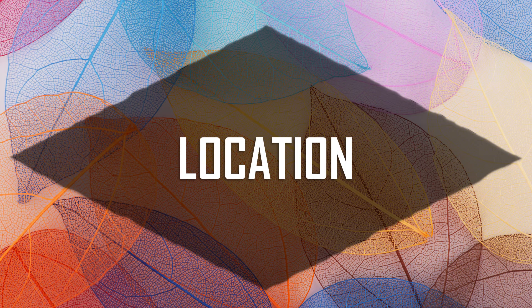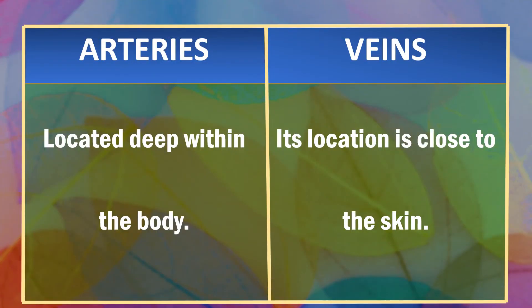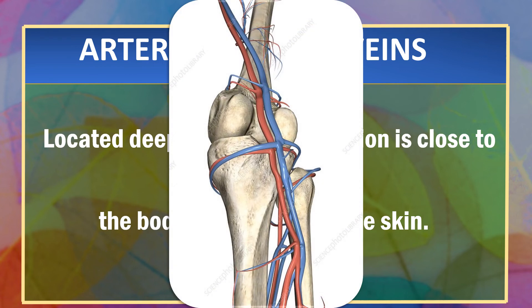Now, let's look at the locations of arteries and veins. Arteries are located deep within the body while veins are located close to the skin. This is because blood flows at high pressure in arteries, and any injury could lead to high blood loss as compared to injured veins.